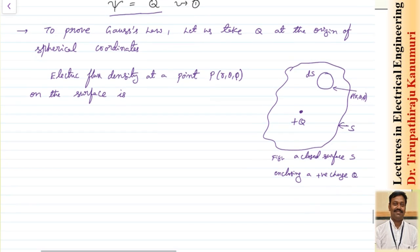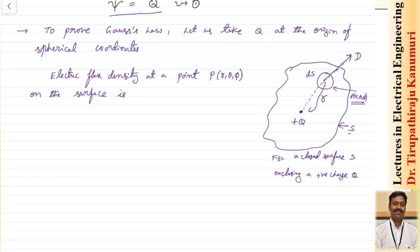To prove Gauss's law, let us take an example in the spherical coordinate system. Assume a charge Q is lying at the origin of a sphere, and we want to find the flux density at point P(r, θ, φ). The flux lines go outward from the charge, so the direction of flux density D is radial. The flux density is D equals Q divided by 4πr², in the direction of a_r, since it depends only on distance.